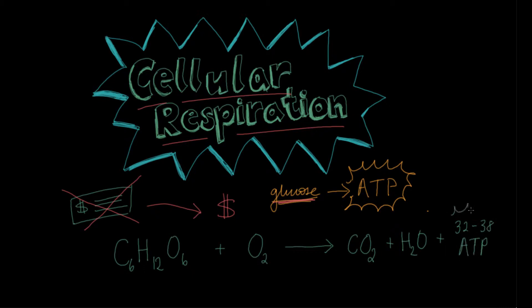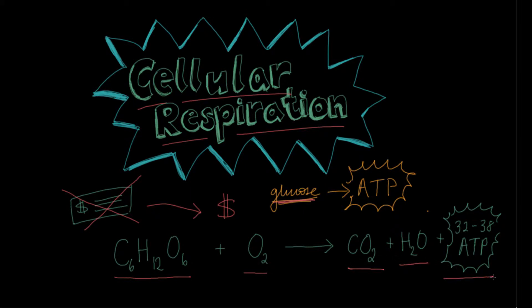This ATP is what we are interested in — this is what the whole process is all about. We break glucose down into carbon dioxide, extracting the energy from it. We need some oxygen to do that, and another output is water. Carbon dioxide and water are waste products; ATP is what we actually want.